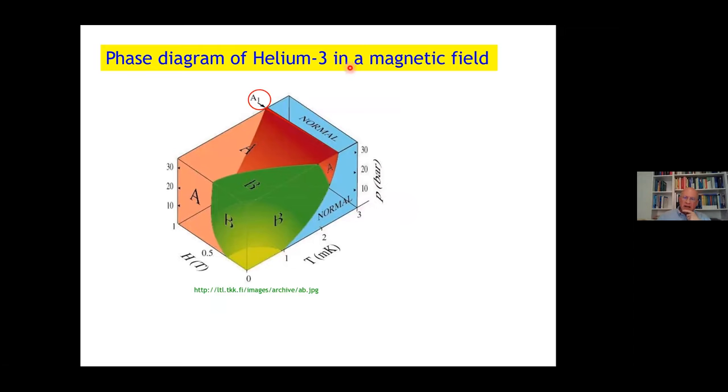If a magnetic field is switched on, we find another phase, the A1 phase, which is just a little wedge between the normal and the A phase. So there are altogether three stable superfluid phases.